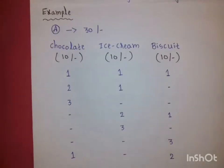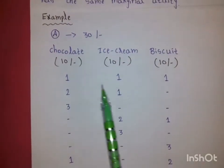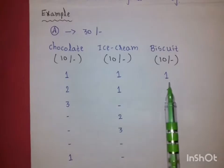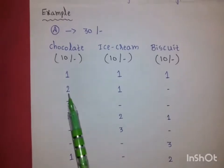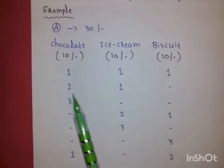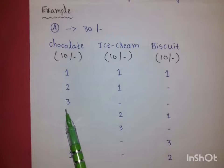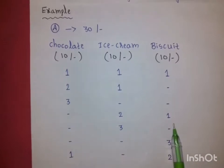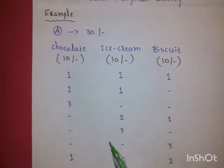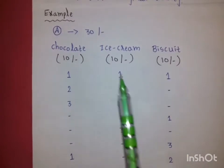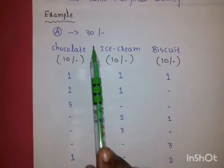For example, a consumer with 30 rupees can spend it in various combinations: one chocolate, one ice cream and one biscuit; or two chocolates and one ice cream; or three chocolates; or two ice creams and one biscuit — these are various combinations in which the consumer can spend the 30 rupees.